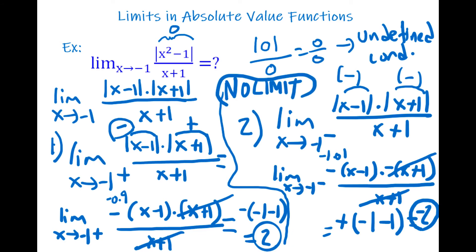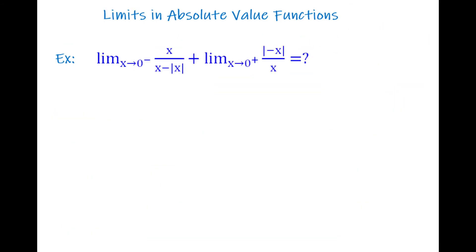This is our last question. It says: [limit as x→0⁻ of x / (x − |x|)] + [limit as x→0⁺ of |x| / x]. Because the problem specifically tells us to approach 0 from the left or from the right, we don't need to separately check left and right limits ourselves — just evaluate as directed.